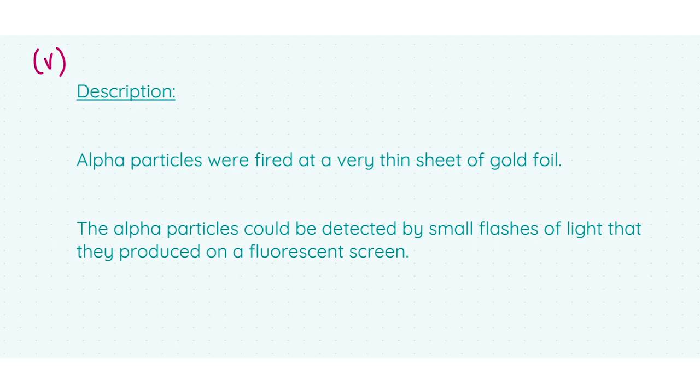Now onto the description which will get you the bulk of your marks. We have here that alpha particles were fired at a very thin sheet of gold foil. That will get you three marks. And the alpha particles could be detected by small flashes of light—key phrase—that they produced on a fluorescent screen, which is also the equivalent of a detector. That will get you three marks as well.